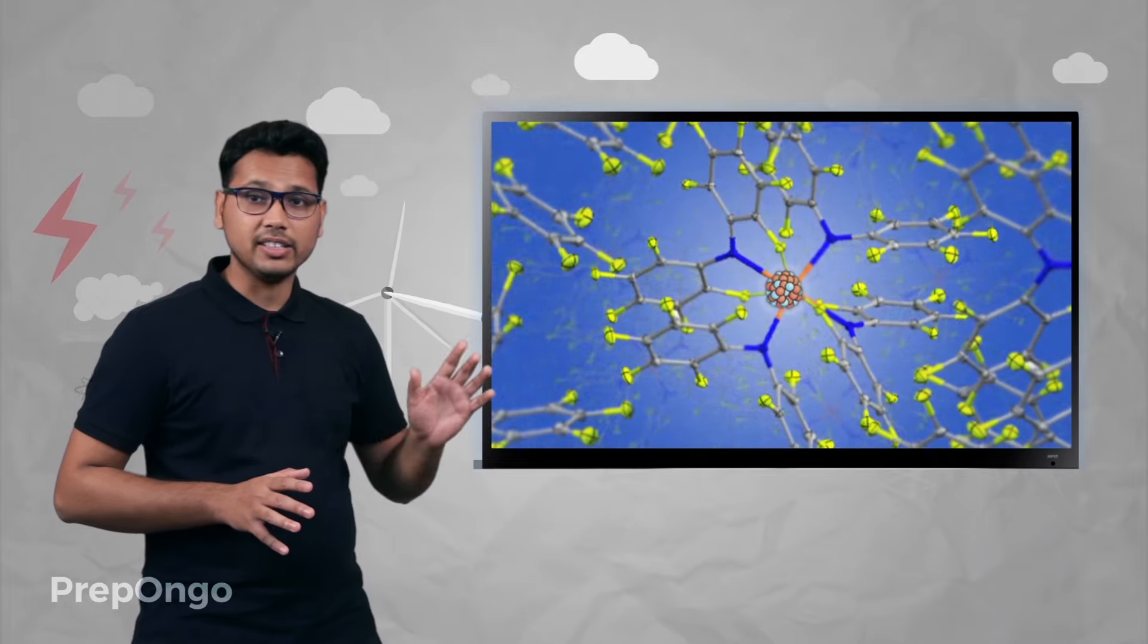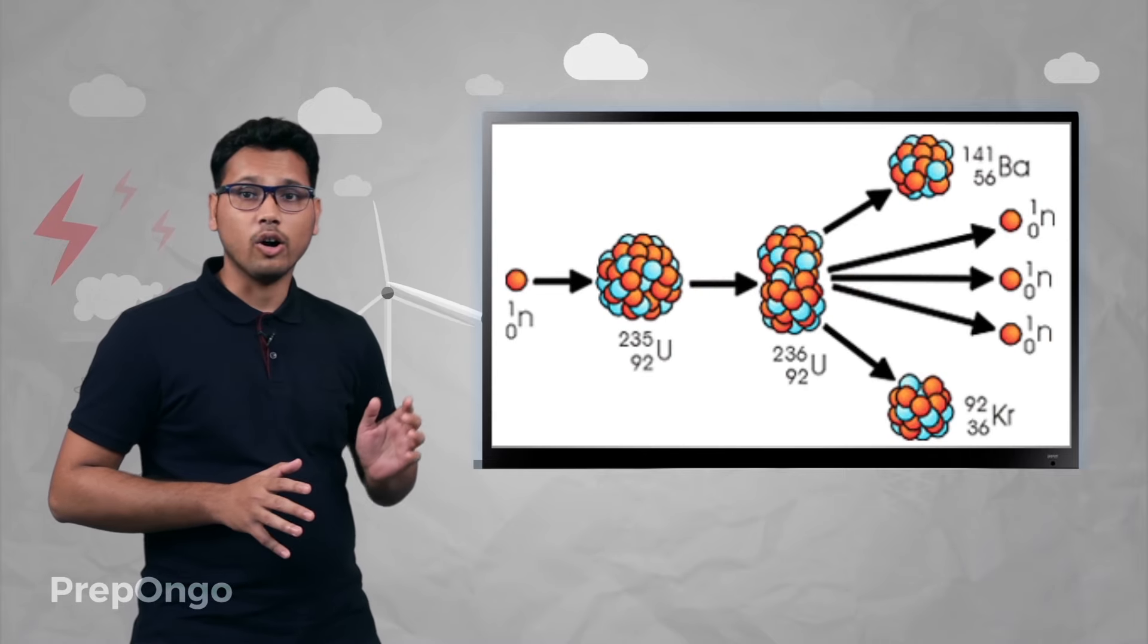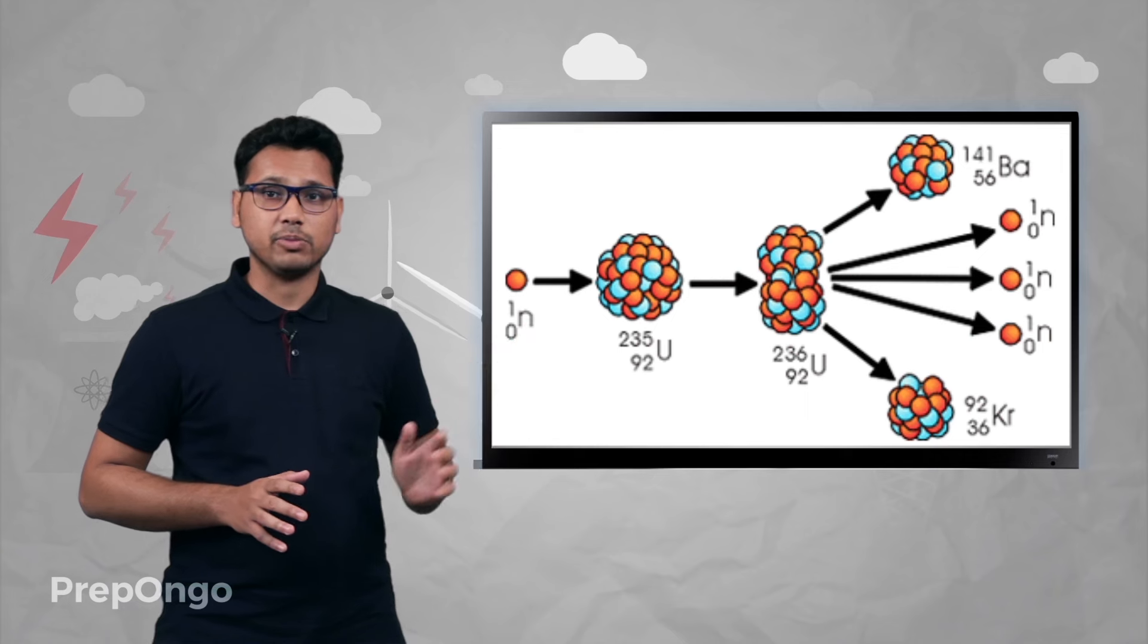Now if we zoom into the heavier elements like uranium and plutonium, we'll find that their nuclei is highly unstable. So when a slow-moving neutron is bombarded onto these elements, the nucleus absorbs that neutron and then it splits into two lighter nuclei of barium and krypton.